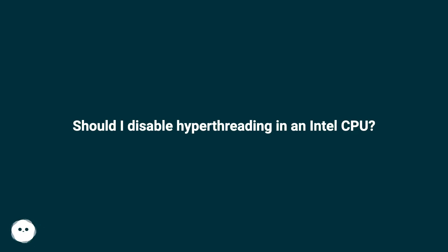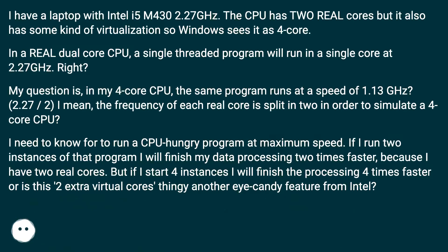Should I disable hyperthreading in an Intel CPU? I have a laptop with an Intel i5M at 2.27 GHz. The CPU has two real cores, but it also has some kind of virtualization so Windows sees it as a 4-core CPU.